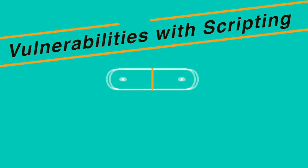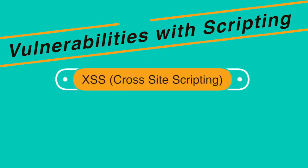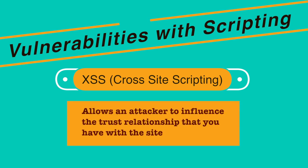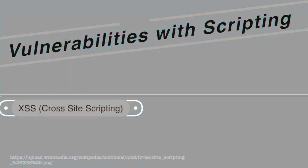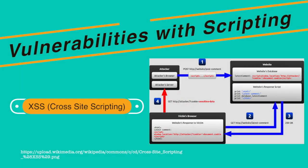The first vulnerability is cross-site scripting, also known as XSS. It is a website vulnerability which allows an attacker to influence the trust relationship you have with a site. When you access a website you trust, the attacker tries to exploit that trust. This is not caused by a failure in the web browser but by the way websites are designed. The attacker inserts specially crafted code in the website and tries to get the user to take an action with malicious intent.